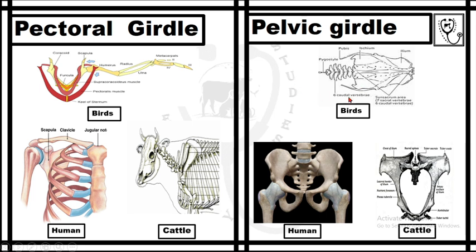The pelvic girdle consists of the os coxa bone. The os coxa bone is formed by the fusion of three paired bones: the ilium, ischium, and pubis. In the pelvic girdle of a chicken, the os coxa bone fuses with the synsacrum. The synsacrum is a complex bone formed by the fusion of seven sacral and six caudal vertebrae.